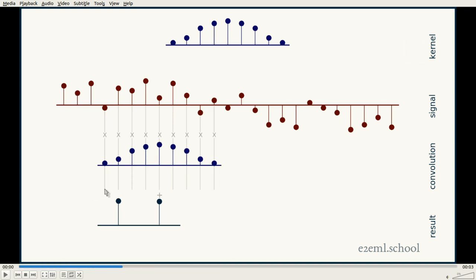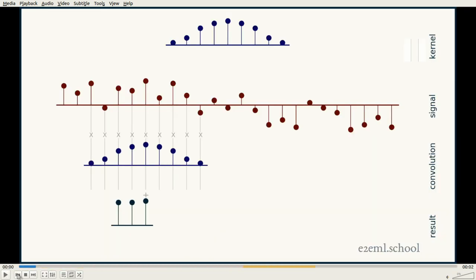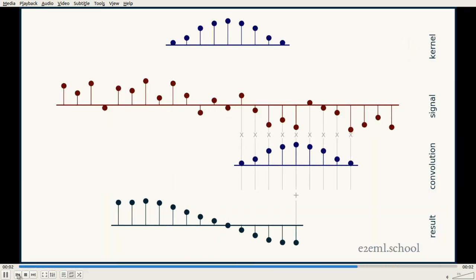This skip is called a stride. If you're visiting every single position, that's a stride of one. If you're skipping a position each time, that's a stride of two, etc.